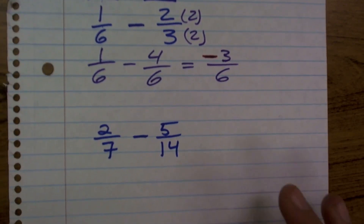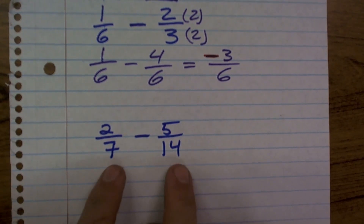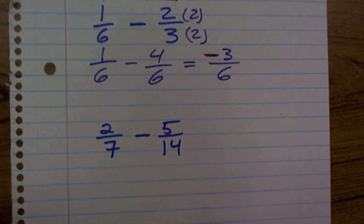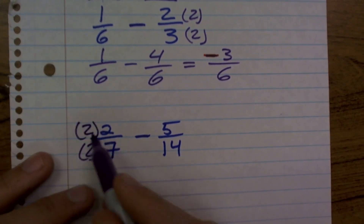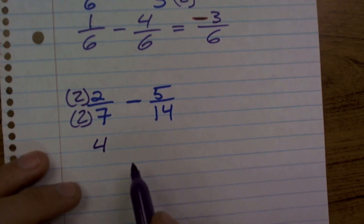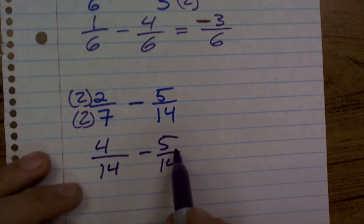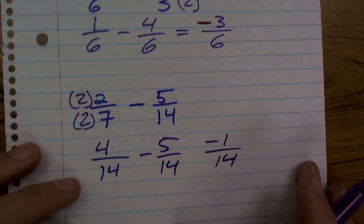Let's look at another example. Let's say I want to subtract two sevenths minus five fourteenths. In this case, our common multiple shares one of our denominators. So the common denominator between seven and fourteen is just going to be fourteen. I'll multiply by two over two. So now I'll get four over fourteen minus five over fourteen. The denominators are the same — subtract the numerator. Four minus five is going to give me a negative one over fourteen. And that's your final answer.